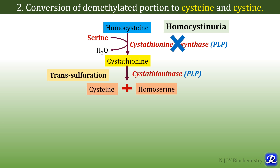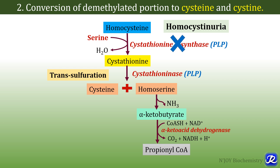Cystathionine is then acted upon by cystathioninase, also a PLP-dependent enzyme, to form cysteine and homoserine. Cysteine is formed by the transsulfuration reaction: the sulfur in cysteine is derived from homocysteine (ultimately from methionine), while the carbon skeleton is derived from serine. The fate of homoserine is formation of alpha-ketobutyrate and ultimately propionyl-CoA, which is converted to succinyl-CoA — an intermediate of the TCA cycle — and then to oxaloacetate for gluconeogenesis, making methionine a glucogenic amino acid.